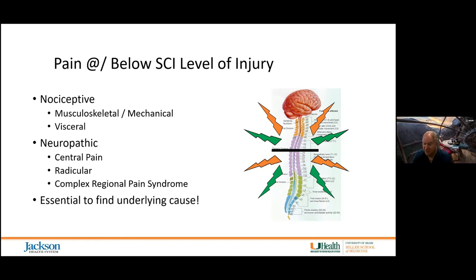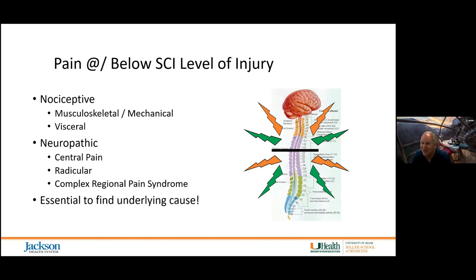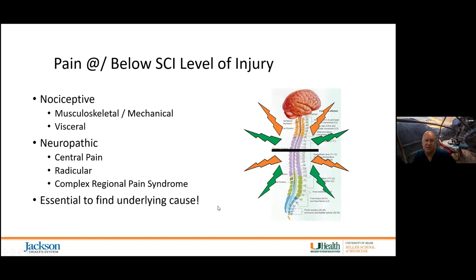Neuropathic pain can occur in the upper extremities — carpal tunnel and ulnar neuropathies can cause neuropathic pain. When neuropathic pain occurs at the level of the spinal cord injury, it is very difficult to manage. There is some evidence that increasing adiposity also increases neuropathic pain. Neuropathic pain at or below the level of injury is problematic, and folks with spinal cord injury can still develop complex regional pain syndrome, experienced as autonomic dysreflexia or increased spasticity. It's very important to find the underlying cause of pain.